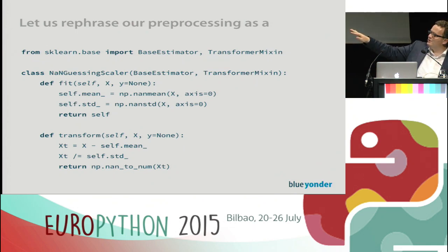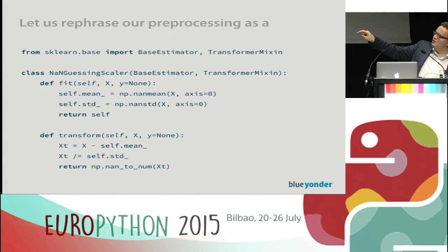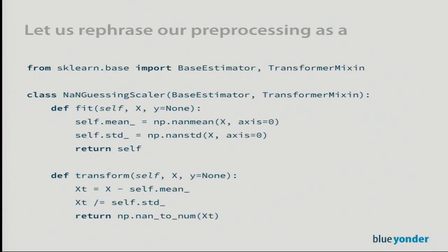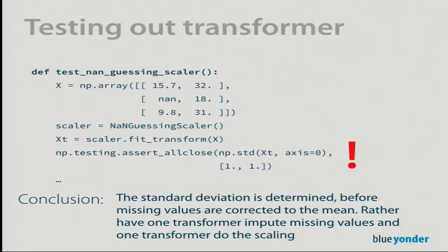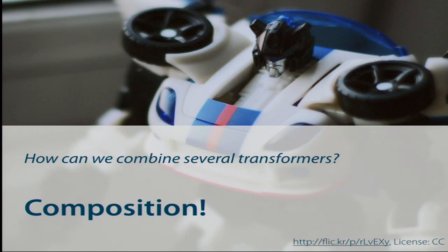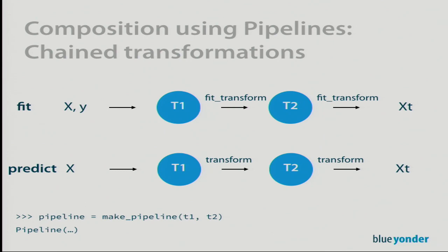To fix this, we need to rethink the transform method. The solution is to have two separate transformation steps: first, a step that replaces NaN values with the mean; then a second step that does the actual scaling of the data. Scikit-learn has a nice way to do this — it offers ways to compose several transformers using pipelines.